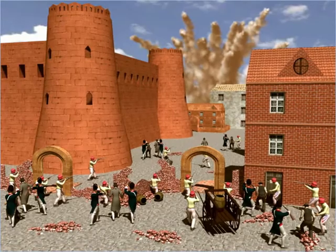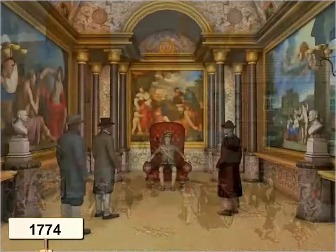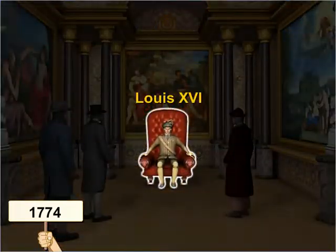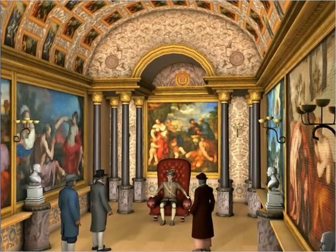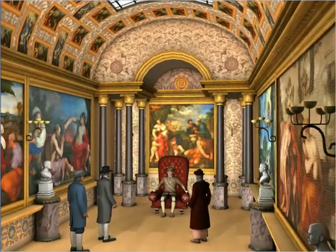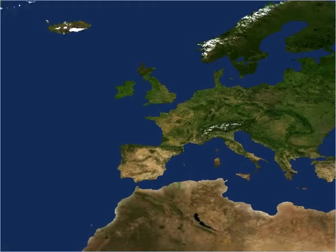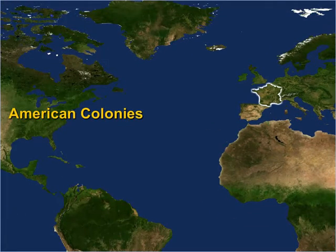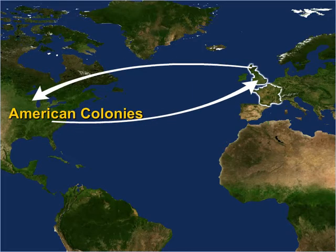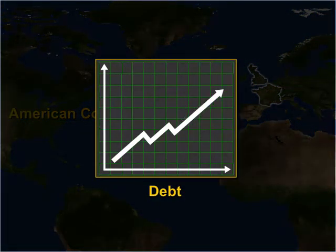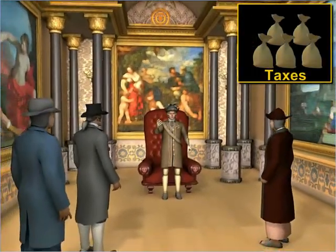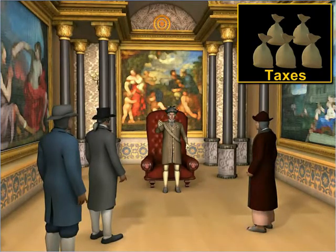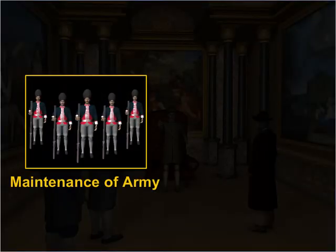There were many causes that led to the revolution in France. In 1774, when Louis XVI became the monarch, France was experiencing a major financial crisis. Continuous wars with Britain and the extravagant ways of the French monarchy had put great strain on the state treasury. Despite its poor financial condition, France helped the American colonies to fight against Britain, which further added to the existing debt burden. Louis XVI increased the taxes in an attempt to meet the regular expenses of the state, such as maintaining the army and the court.